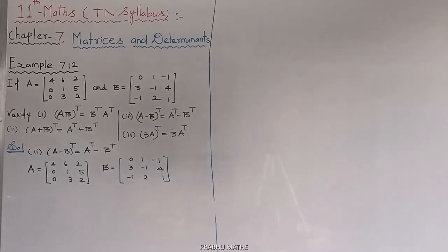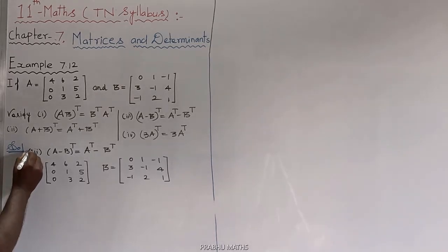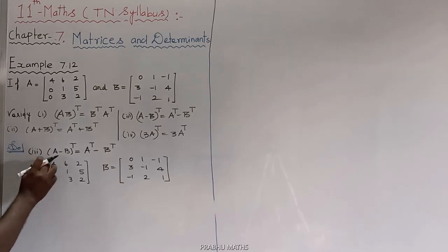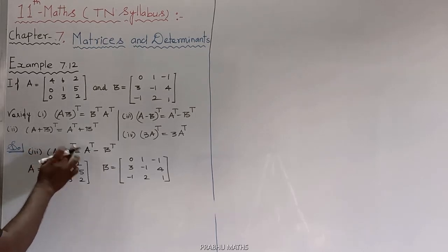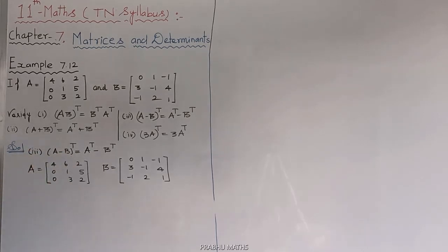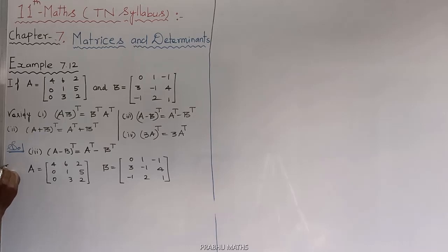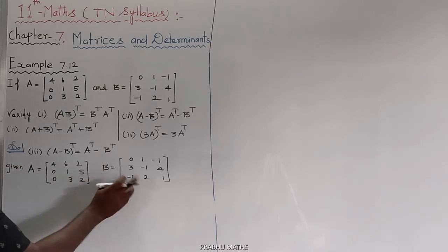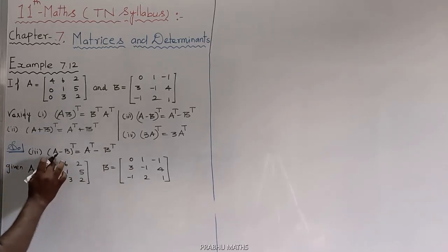Example 7.112, Third Subdivision. This subdivision states that the transform of A minus B is equal to the A transform minus the B transform. The given values are the first matrix A and the next matrix B.